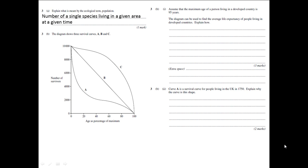The next question is much more tricky because it asks you to analyze a graph and then to be able to interpret what it is basically saying. If we look at it here, the diagram shows three survival curves A, B and C. Along the bottom you have age as the percentage of the maximum and up the side you have the number of survivors.